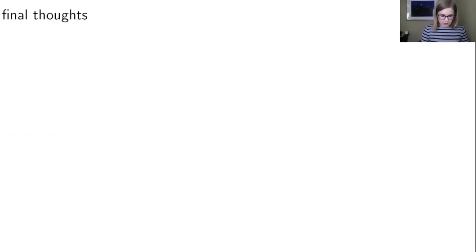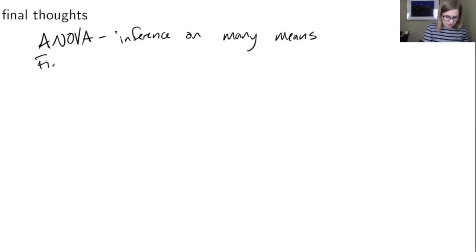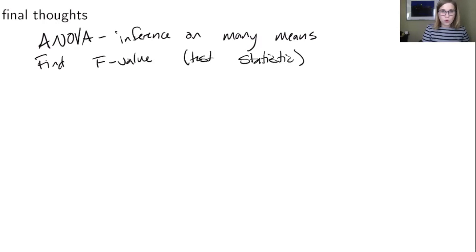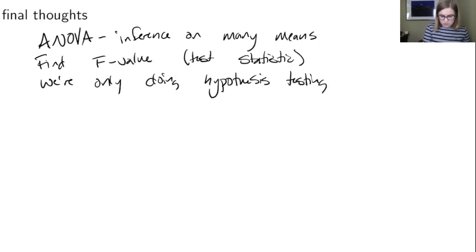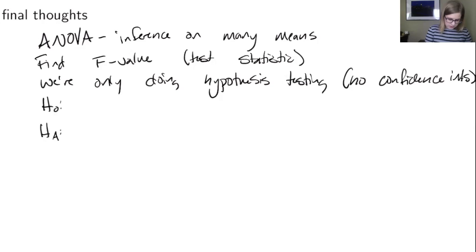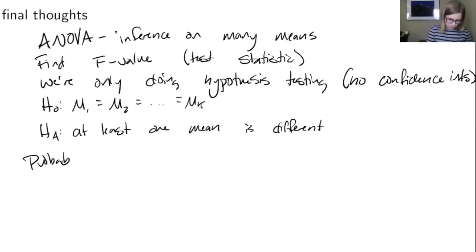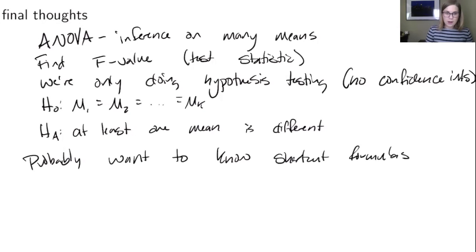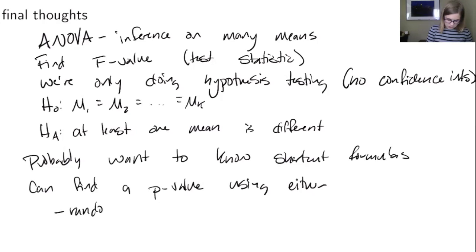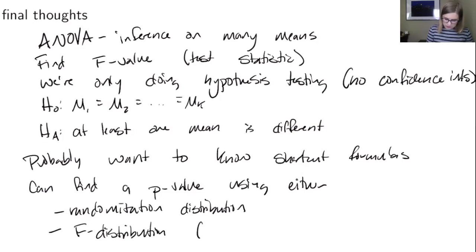Some final thoughts: ANOVA is the way to do inference on many means. We find an F value as our test statistic, and we're only doing hypothesis testing in this section — no confidence intervals. The null and alternative hypotheses are always that mu_1 equals mu_2 equals ... equals mu_k versus at least one mean is different. You'll want to know the shortcut formulas. You can find a p-value using either a randomization distribution or an F distribution, and if you use the F distribution you need to check the conditions.